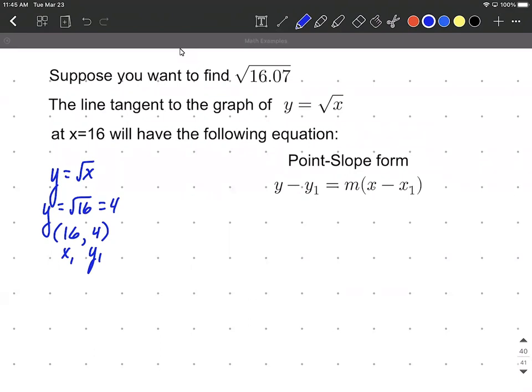Next, we also need a slope to go along with this. So our slope is going to be the same thing as the derivative evaluated at an x value of 16. So to get this derivative, I'm going to visualize this as x to the one-half power for our function instead of the square root of x. And we can use our power rule to bring the exponent down in front and then reduce the exponent by one.